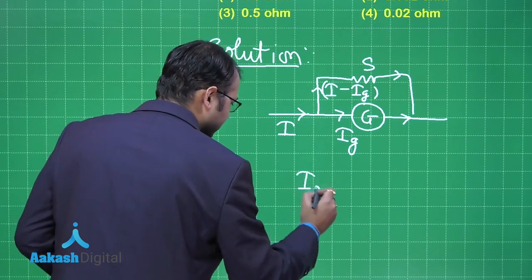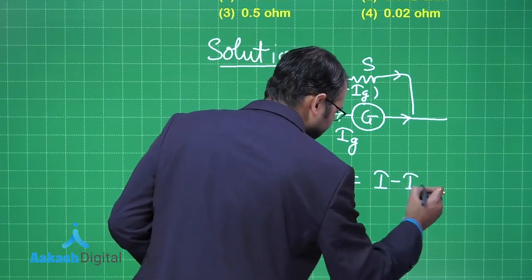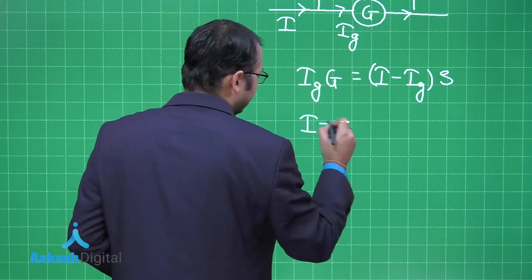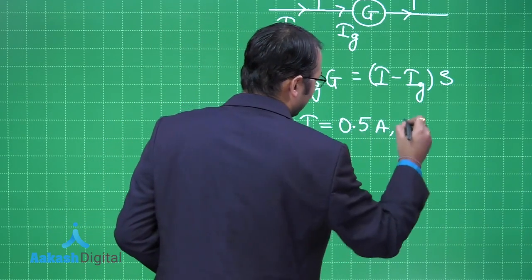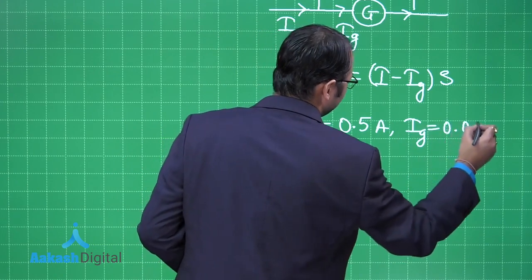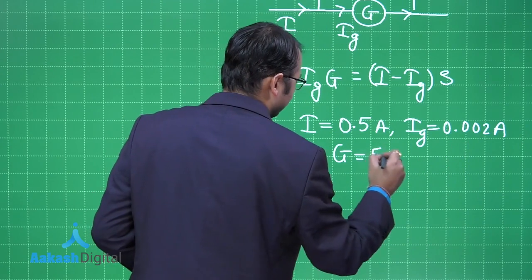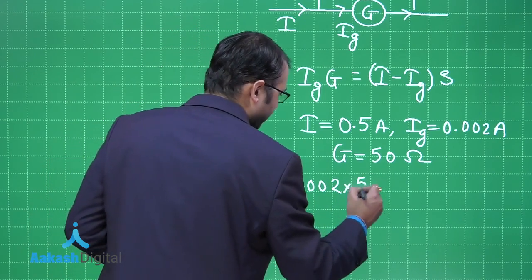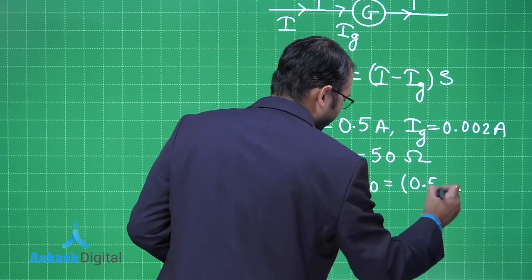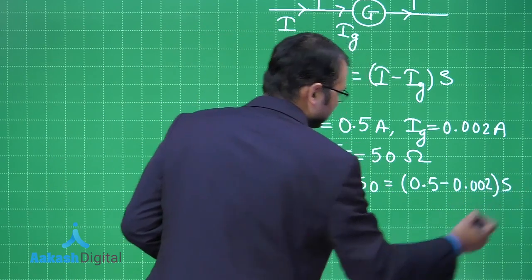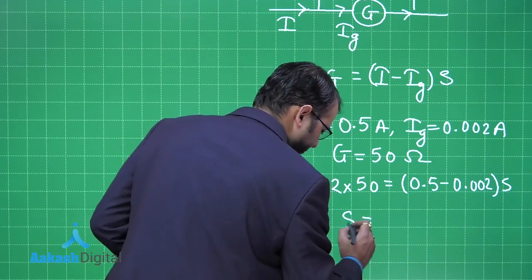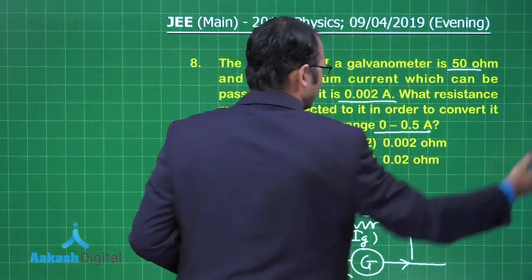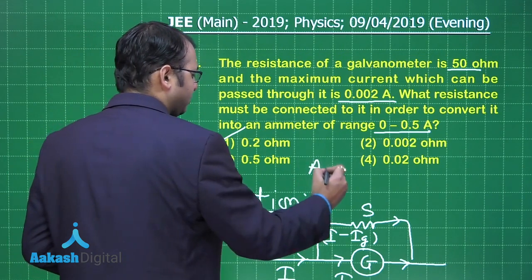So the potential of both S and G should be equal, so I will write i small g into capital G, that would be equal to I minus ig into S. So here if you see, capital I is given to us as 0.5 ampere, ig is given to us as 0.002 ampere, and capital G is given to us as 50 ohm. Let's put down the value. So this is 0.002 into 50, that is equals to 0.5 minus 0.002 into S. Solving this, S you will get as 0.2 ohm. Let's see which is the best suited option here. So among the four options, option number one would be our right answer.